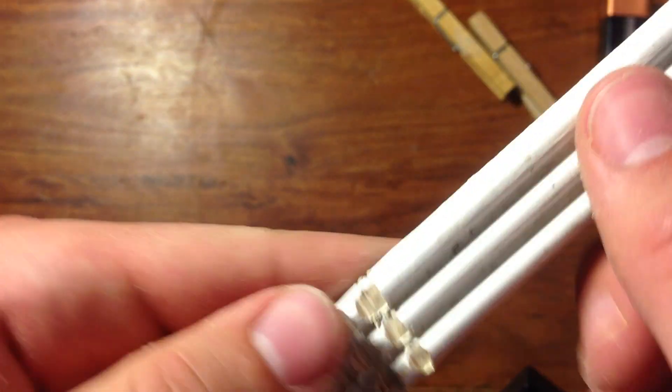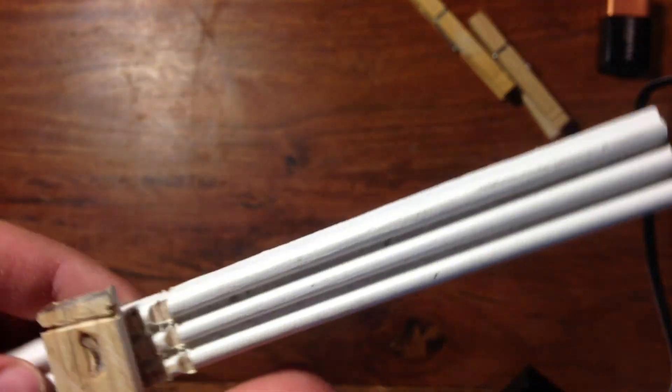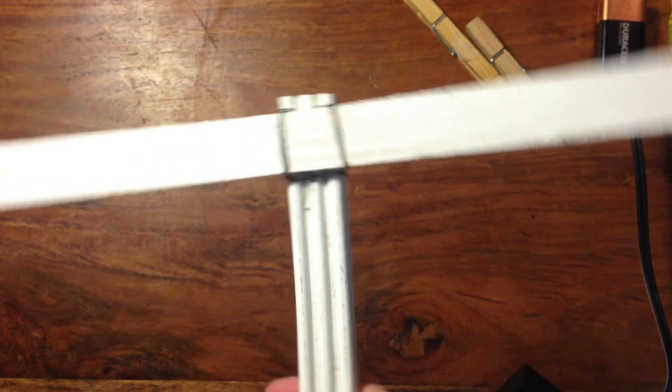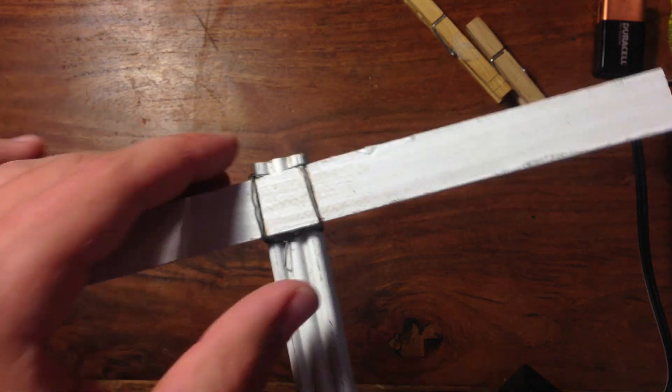Then take the smaller piece of wood and cut two grooves in the middle like this. Now glue the two pieces of wood together and wrap some wire around them for added strength.